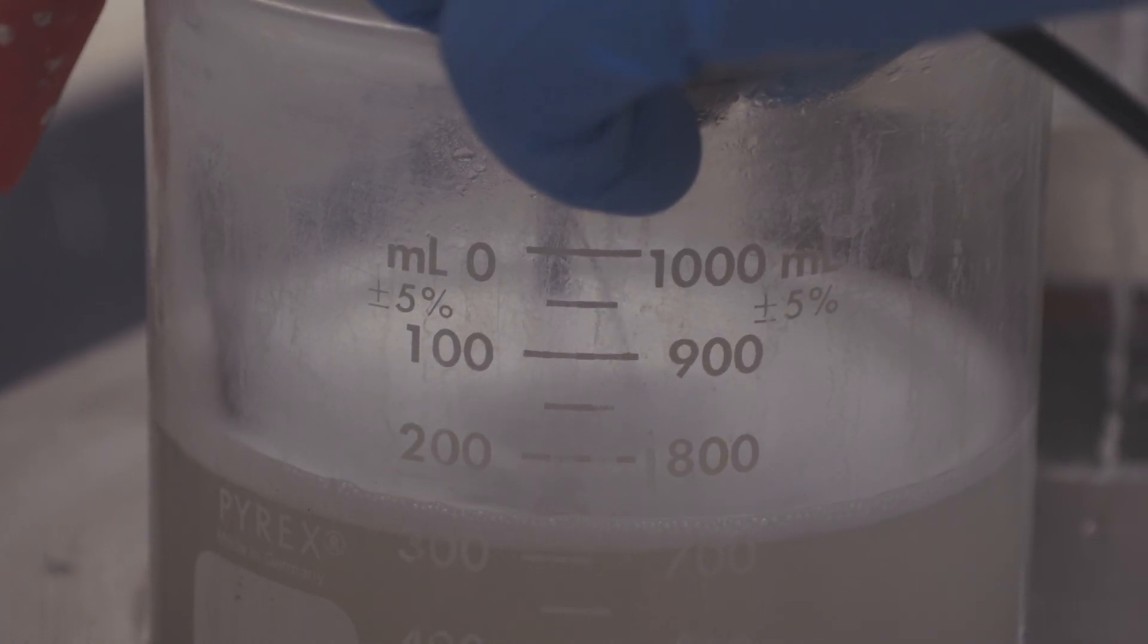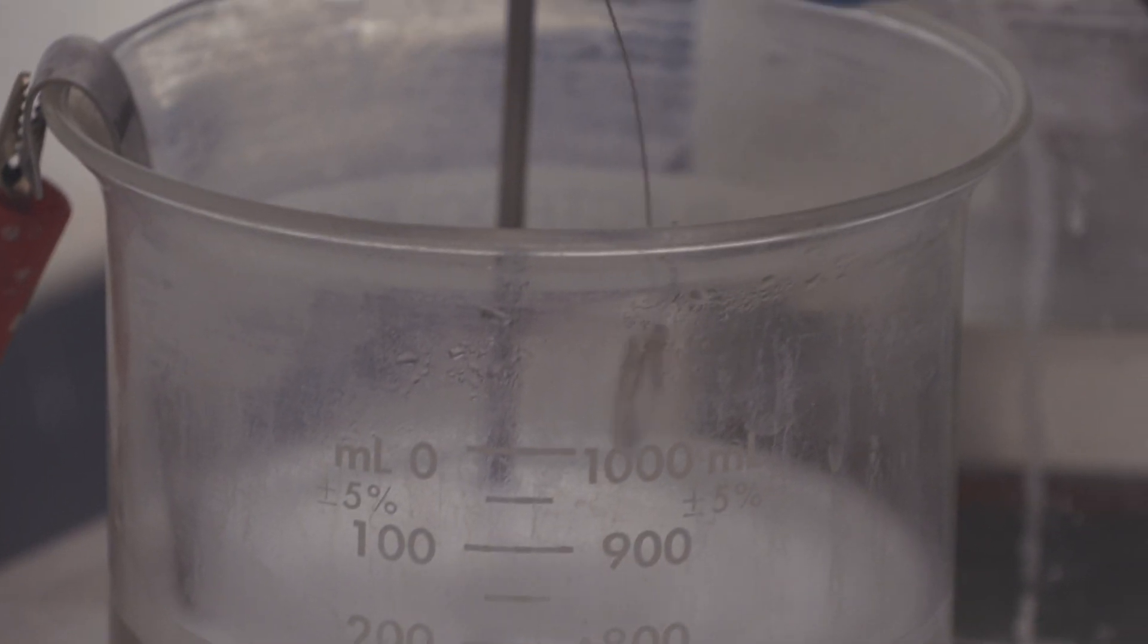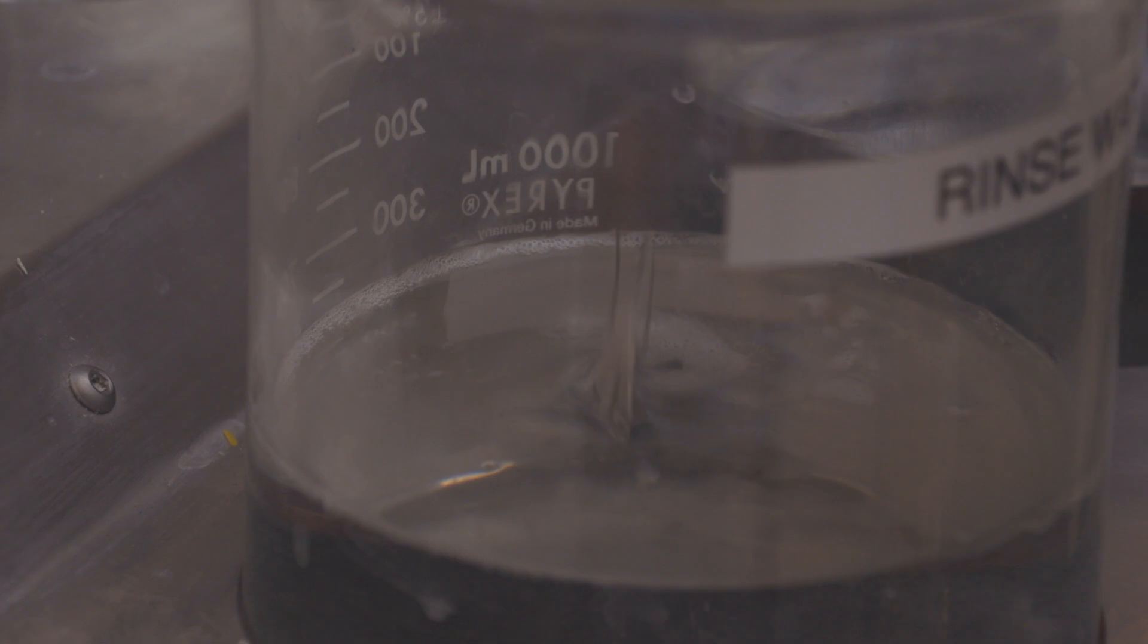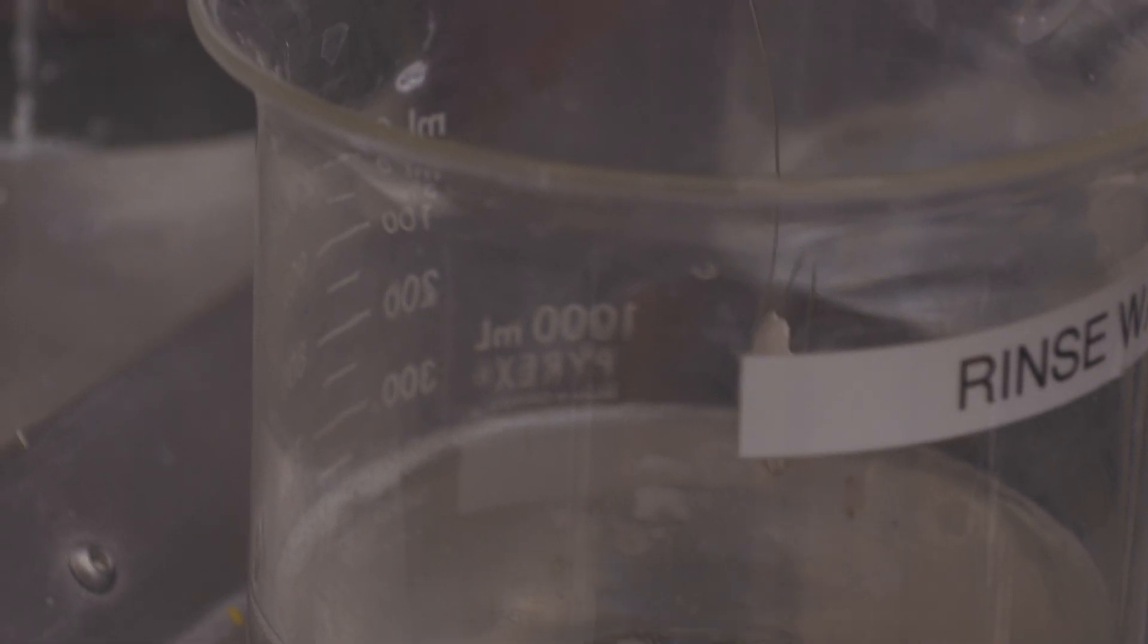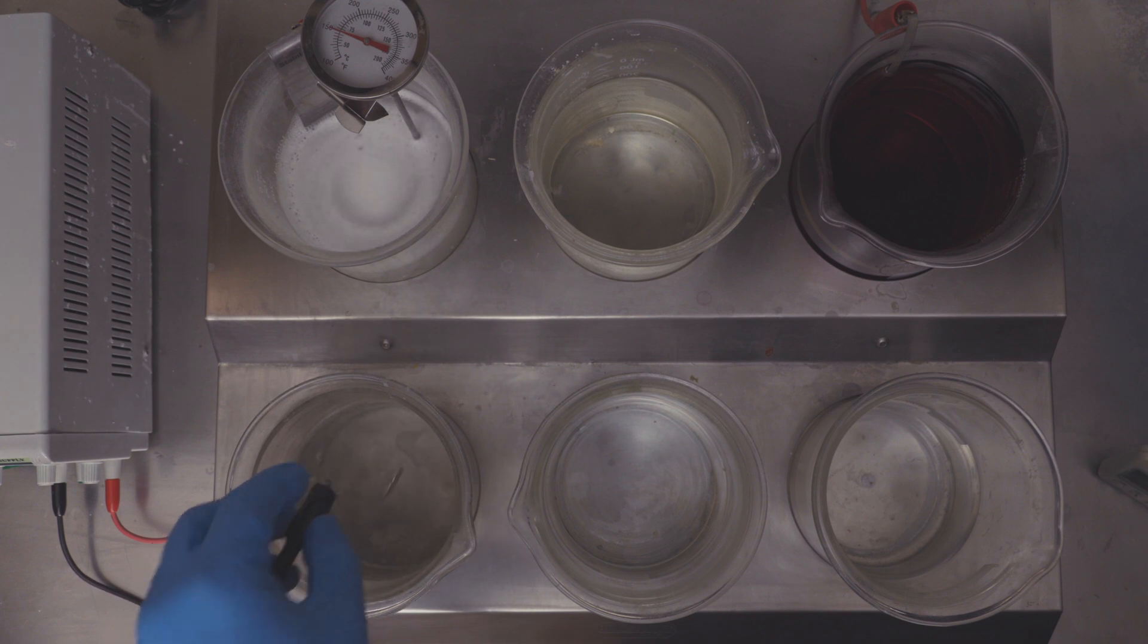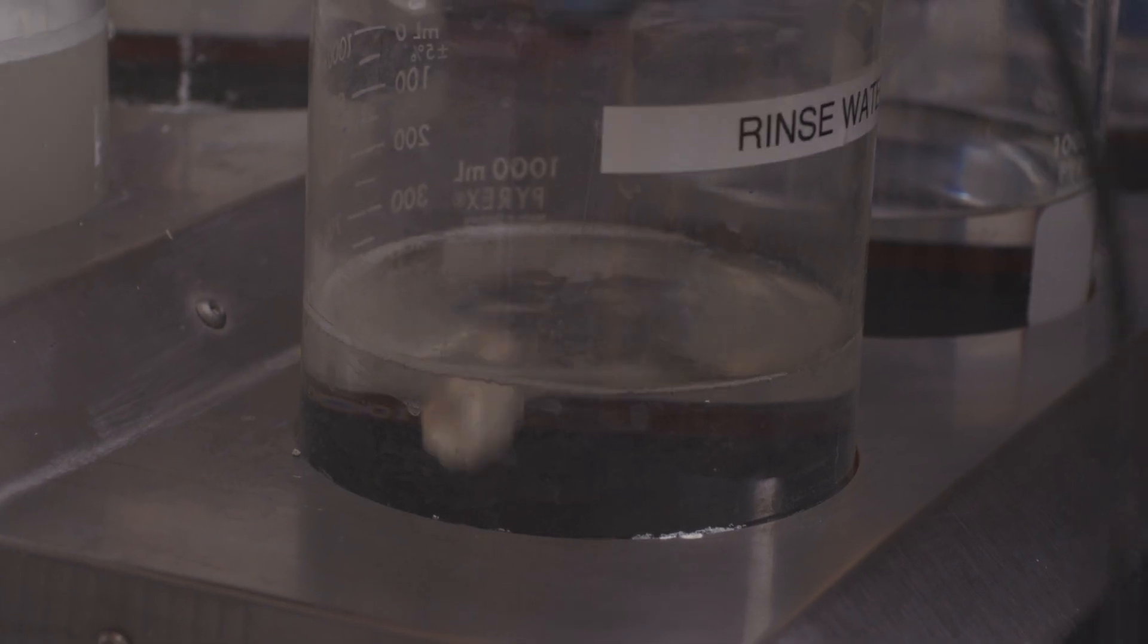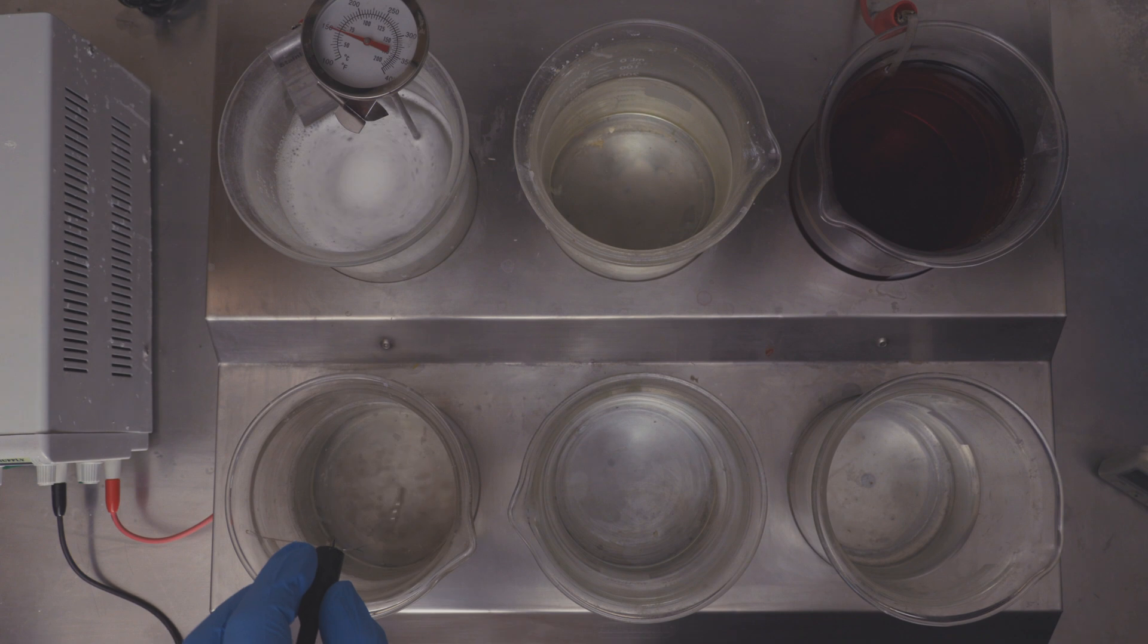Okay, our 60 seconds are done so I'm going to stop my timer and turn off my rectifier. I'm going to go into my first rinse cup to rinse off any electrocleaner. This is just deionized water or distilled water will work just fine. We want to get as much of the electrocleaner off of the piece as possible.